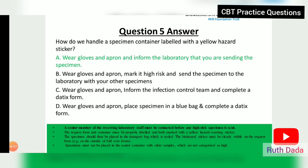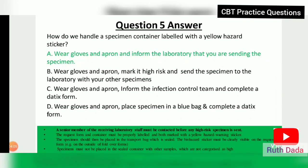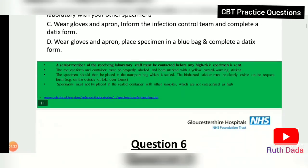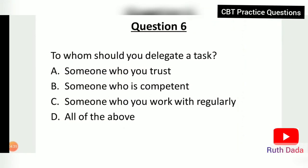The request form and container must be properly labeled and both marked with a yellow hazard warning sticker. The specimen should be placed in a sealed transport bag with the hazard sticker clearly visible. Specimens must not be placed with other samples not categorized as high risk.